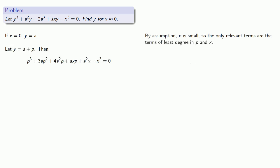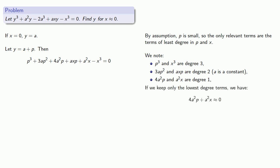Now, by assumption, p is small, so the only relevant terms are the terms of least degree in p and in x. Well, let's consider this. p cubed and x cubed are both degree 3. 3ap squared and axp are degree 2. Remember, a is actually a constant. a squared p and a squared x are degree 1 terms. So if we keep only the lowest degree terms, we get 4a squared p plus a squared x is approximately 0. And we can solve this for p.